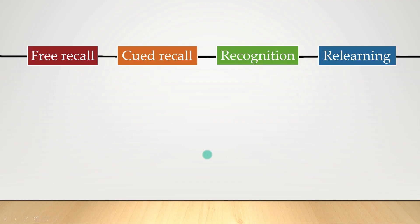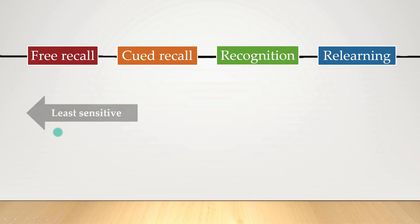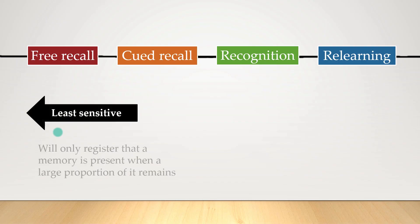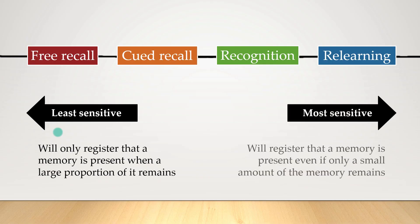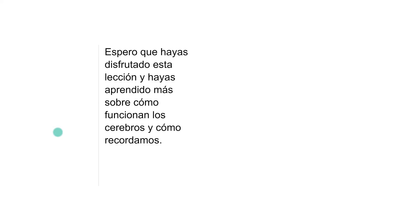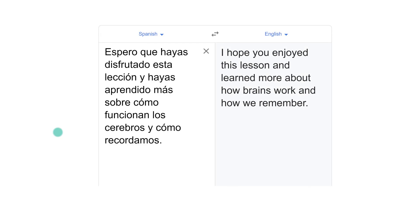If we put the three types of memory retrieval in sequence — recall, recognition, and relearning — you can see that on one side is the most difficult: remembering with very little help. We call this the least sensitive type of memory, because you'll only register that a memory is present if a large proportion of it remains. On the other side is the most sensitive — you can register a memory even if only a small amount of it remains. I hope you've enjoyed this lesson and learned more about how the brain works and how we remember.